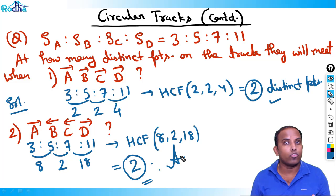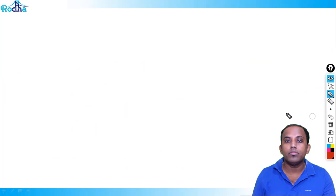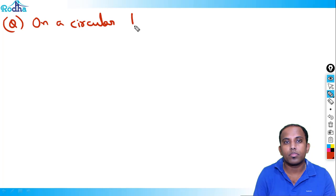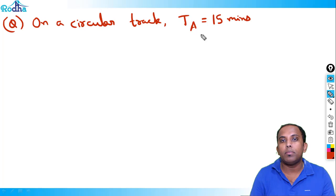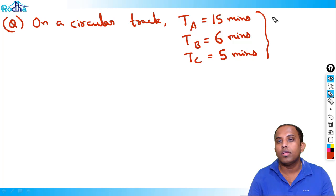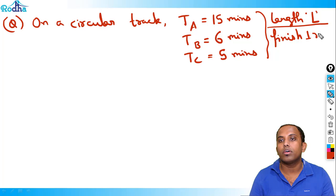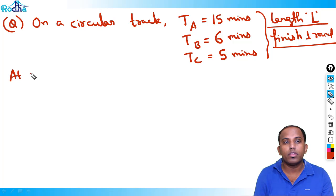So we can do this for two, three, or four persons — whatever you wish. Now let's look at a different variety. On a circular track, time taken by A to finish one round is 15 minutes, time taken by B is 6 minutes, and time taken by C is 5 minutes. The circular track has length L. At how many different points on the track will they meet?